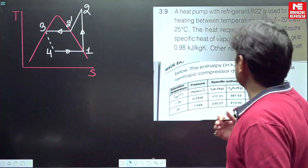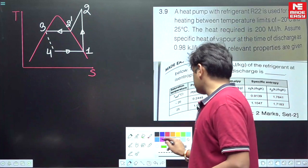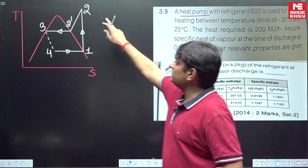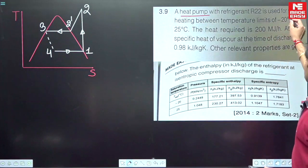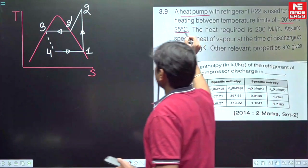Now in this question a heat pump is given. So in the case of heat pump what is your desired effect? Your desired effect is higher and that is condenser, means H2 minus H3. R22 is used for space heating operates between minus 20 and 25 degrees Celsius.